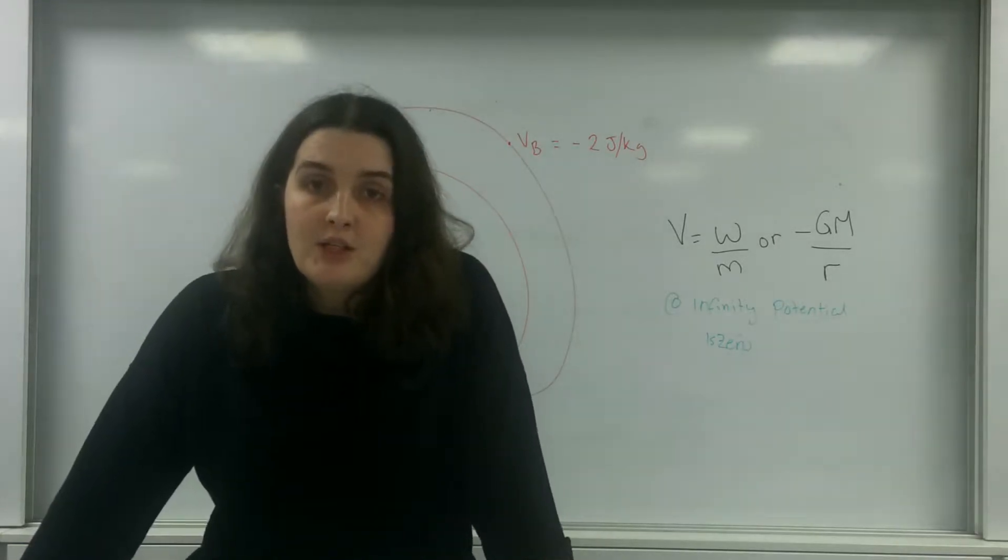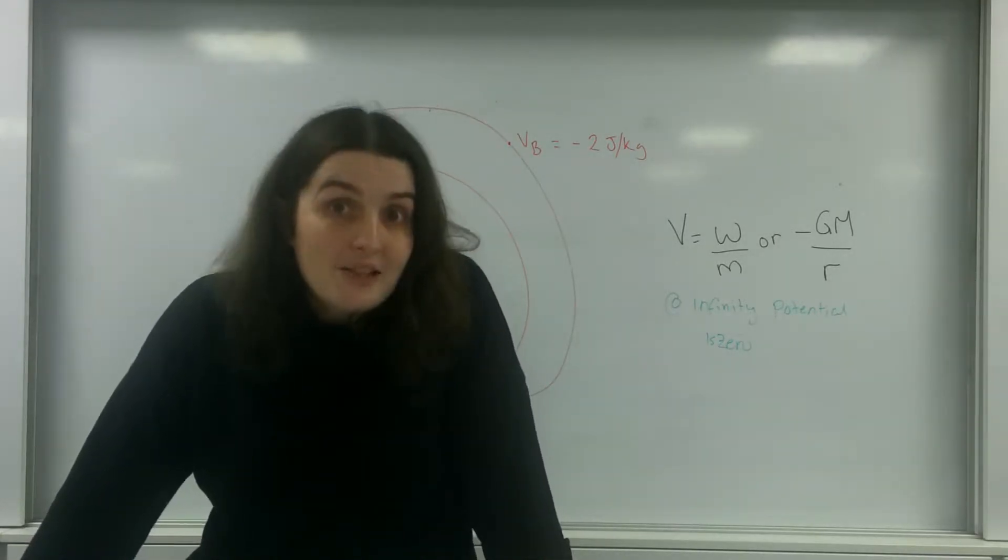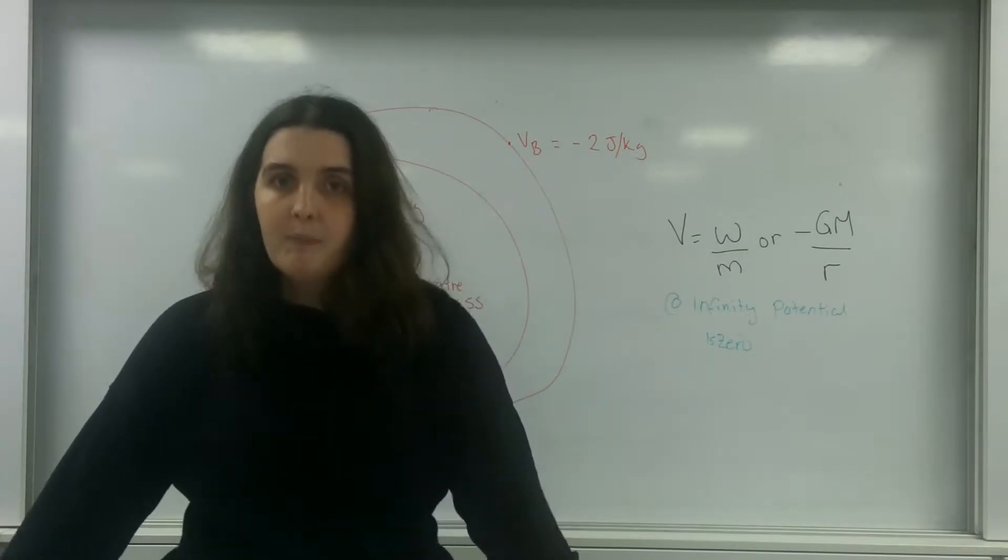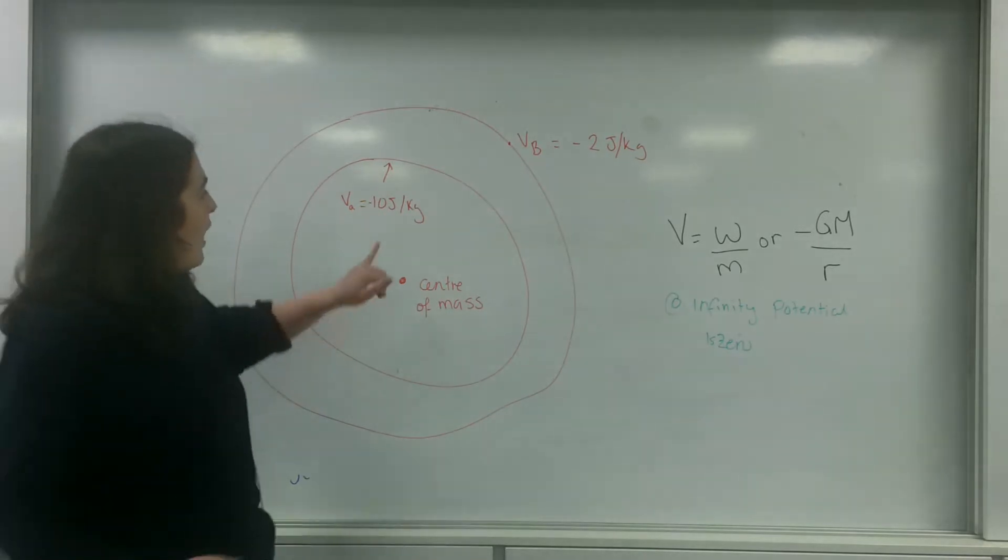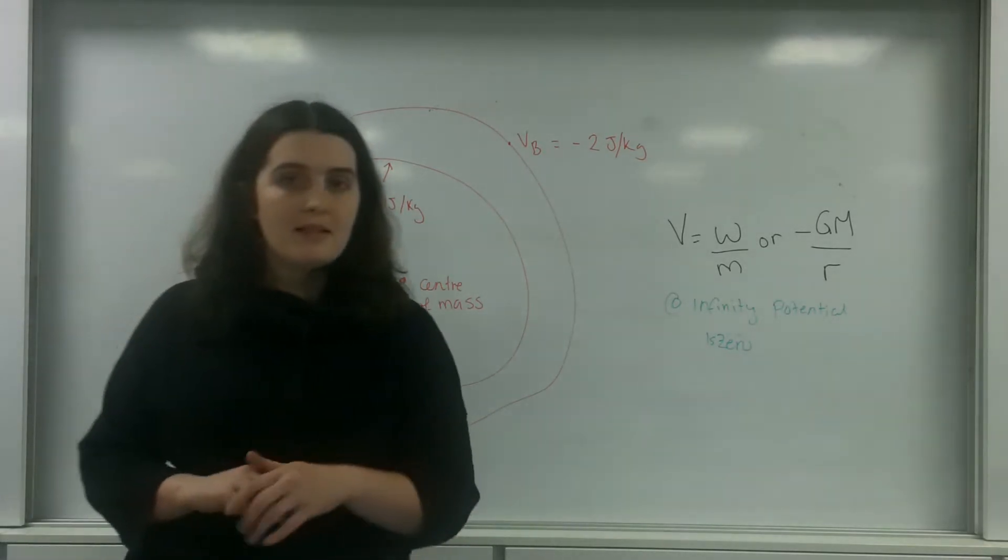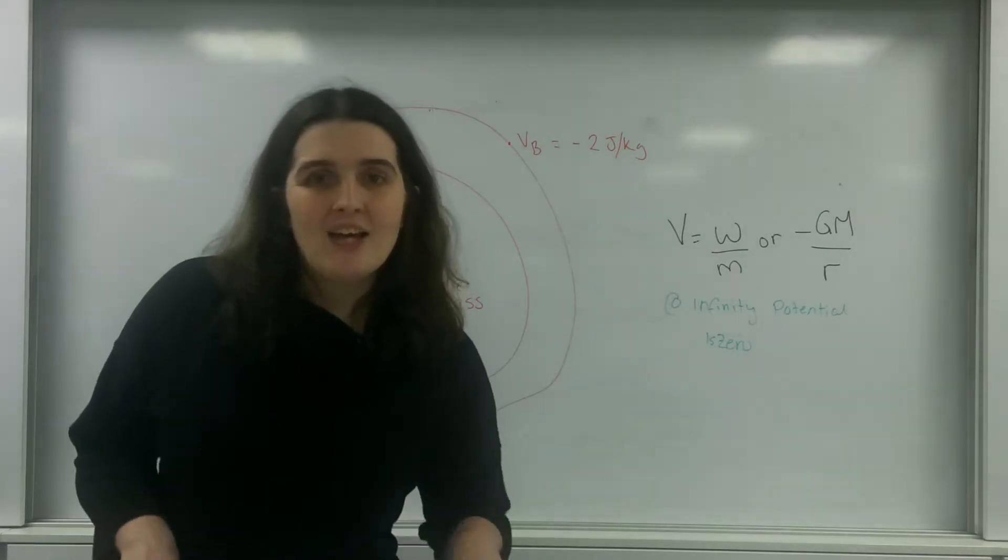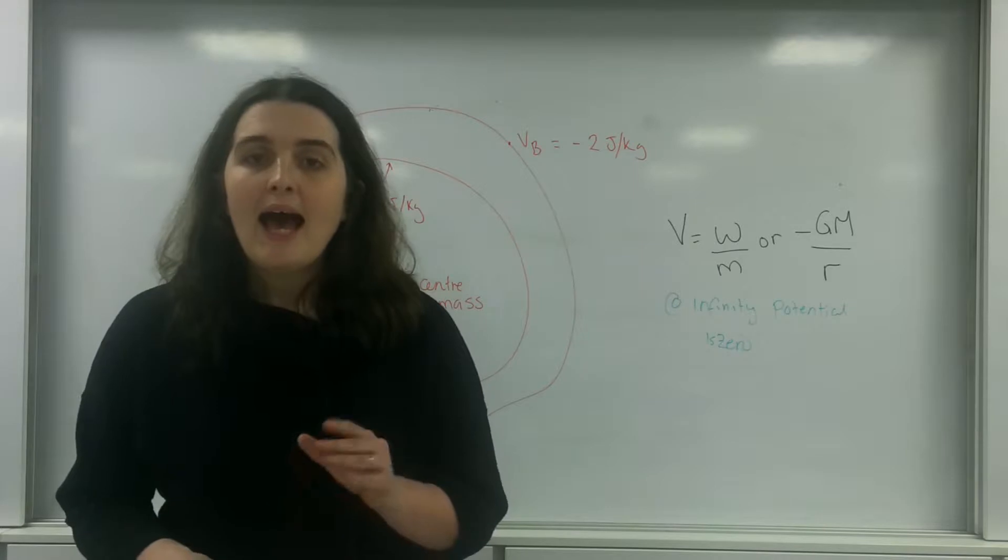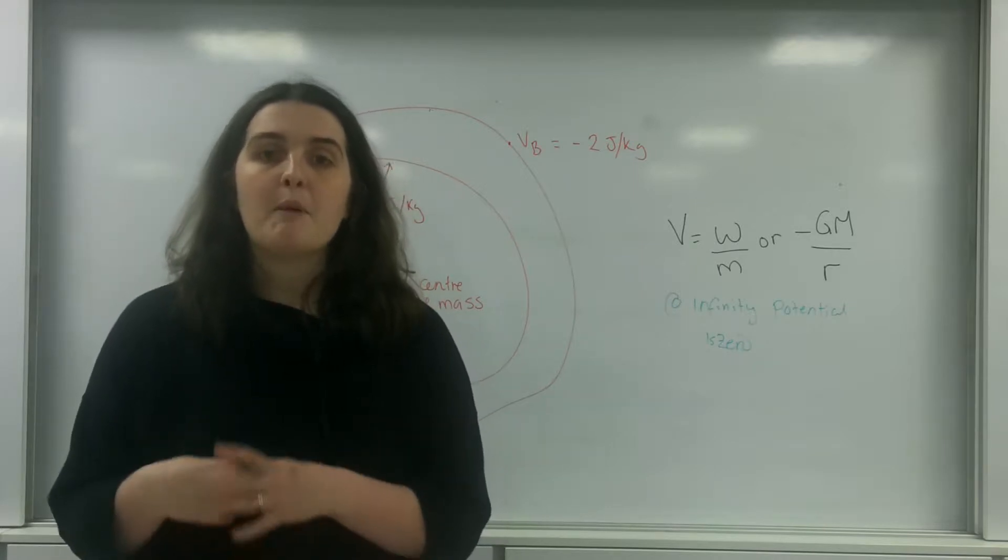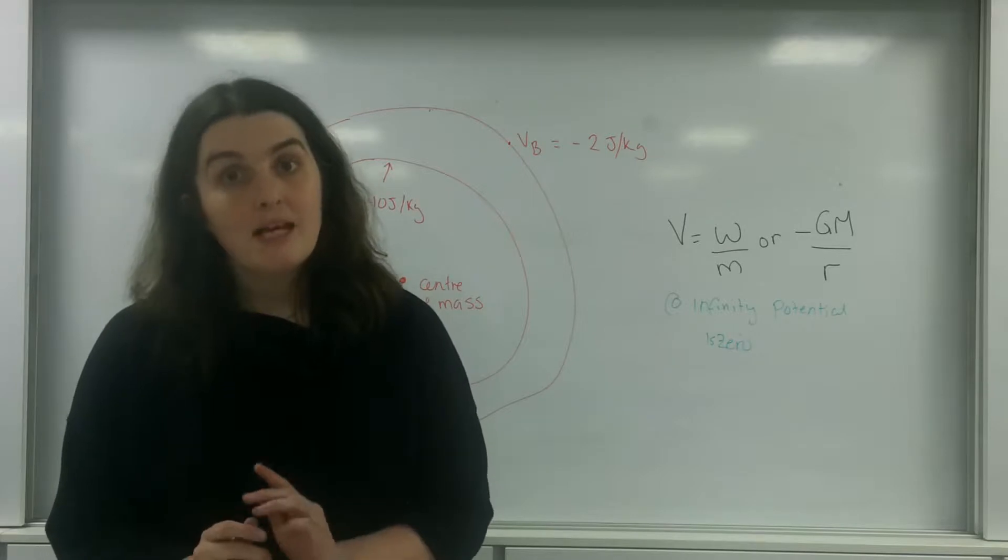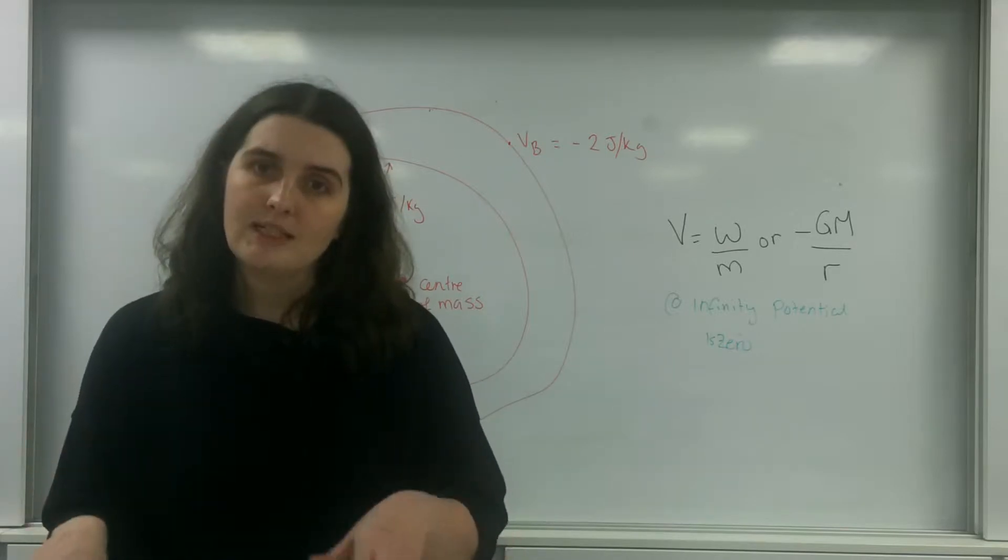Now when you actually have a mass, you can draw these things called equipotential lines. Equipotential lines are areas which have the same potential, so it doesn't matter which object is there, it could be a 100 kilogram mass or a 2 kilogram mass. At this line they have the same potential, but they would have different potential energies.